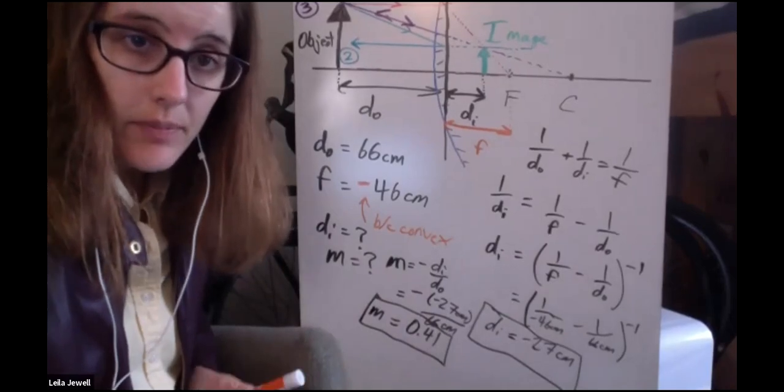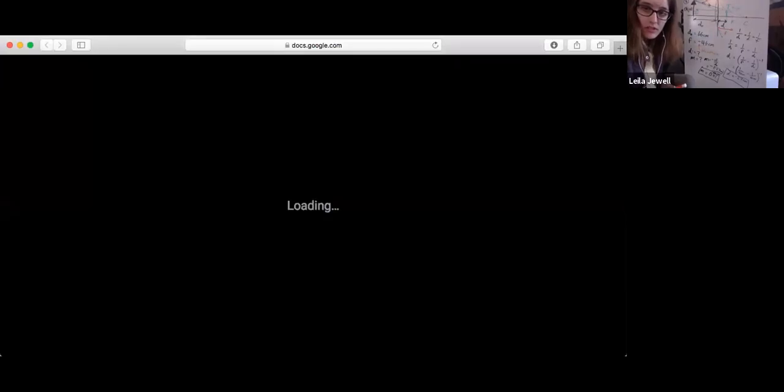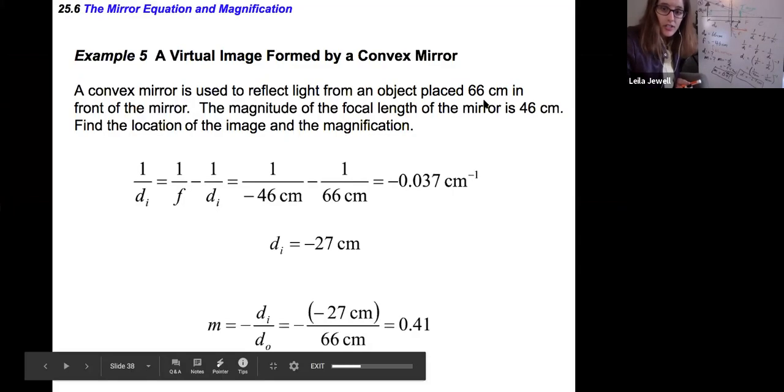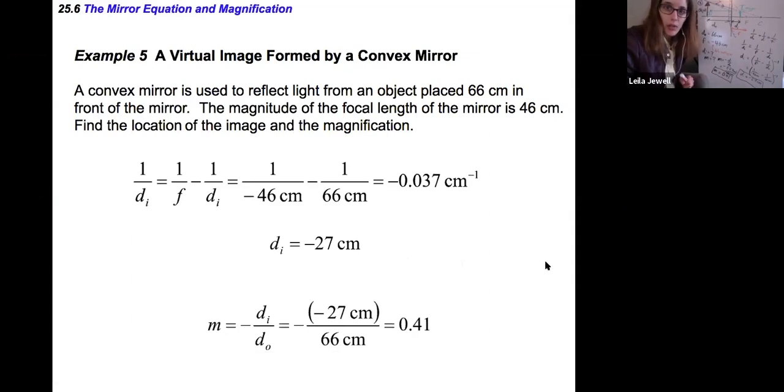That takes us through solving this. As you can see in the slides, they show the exact same result: negative 27 for the image distance and 0.41 for the magnification. That's an example of applying these equations. That's how most of these problems are going to work.